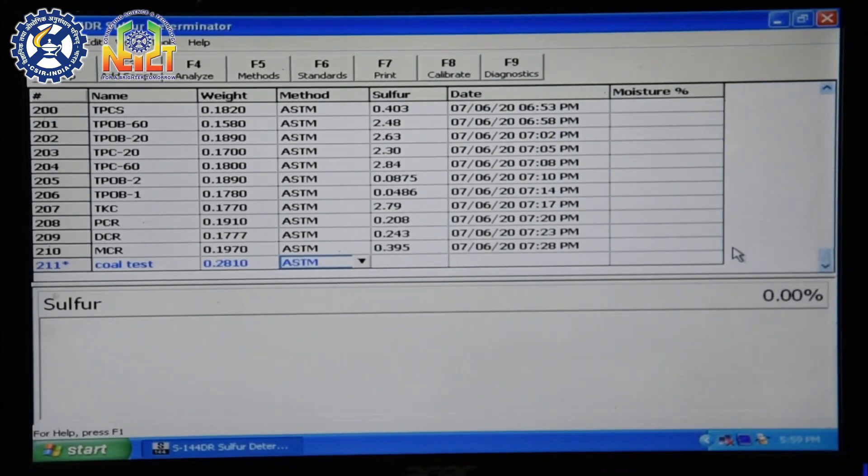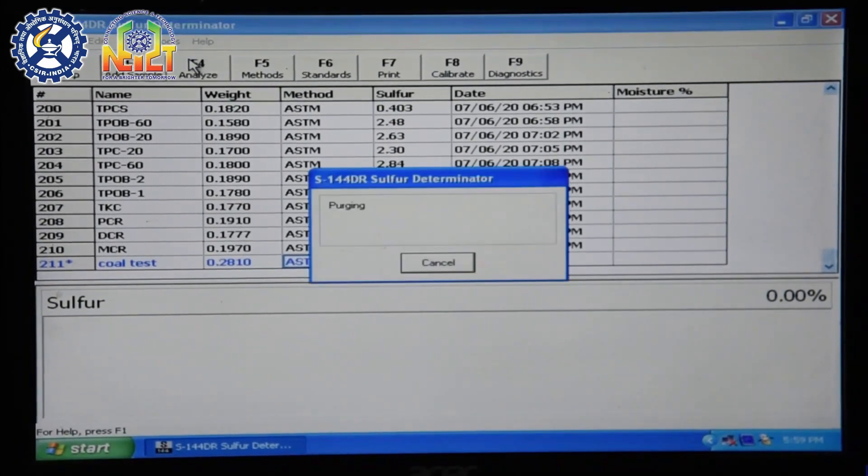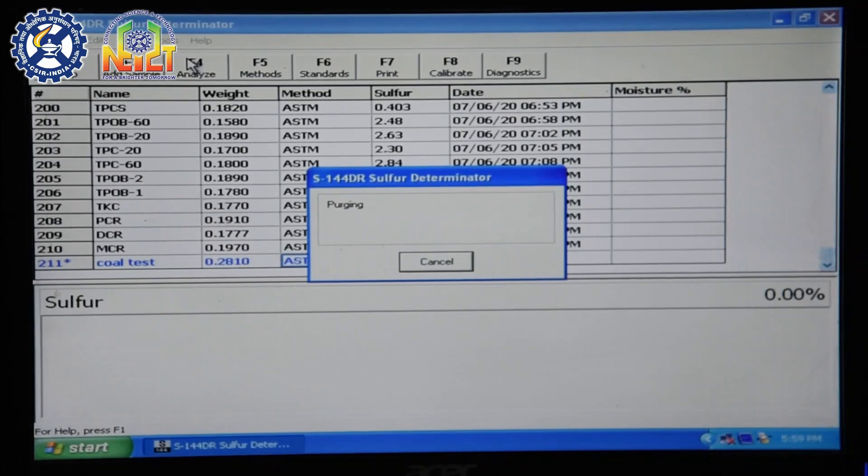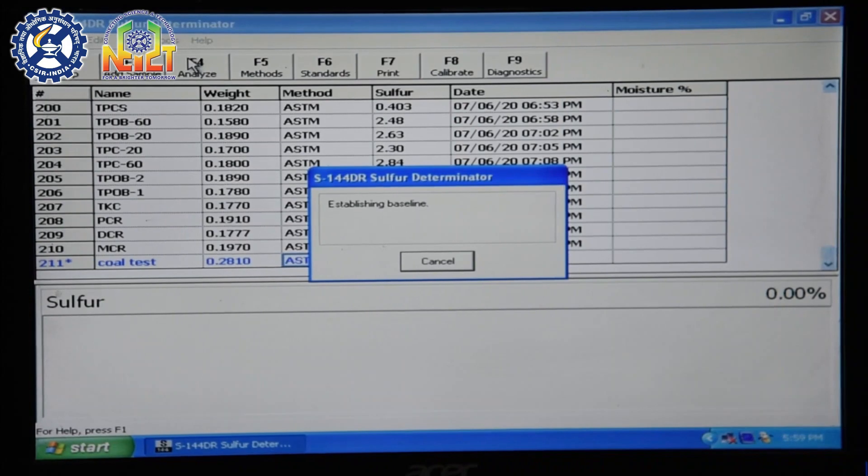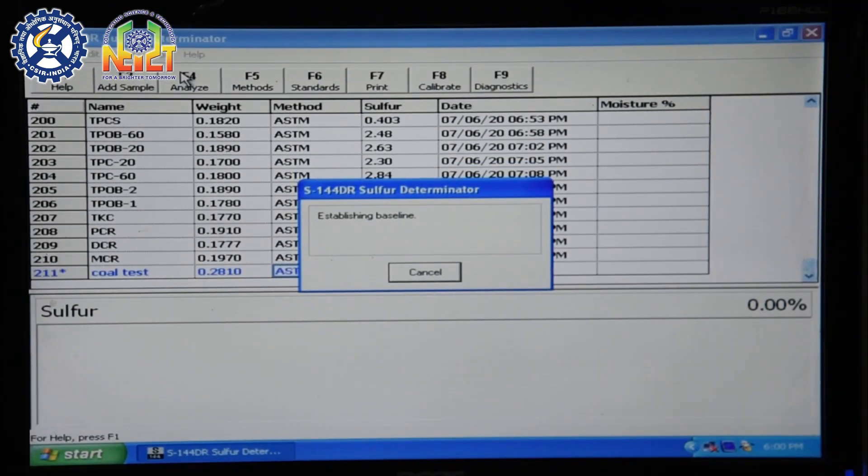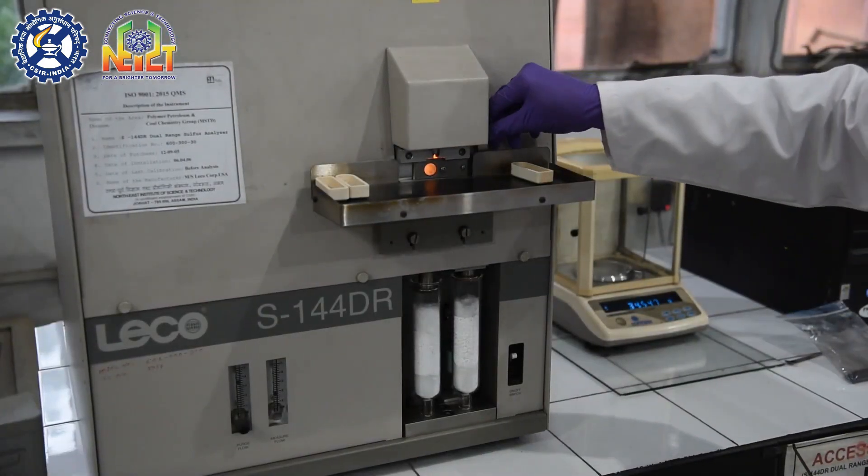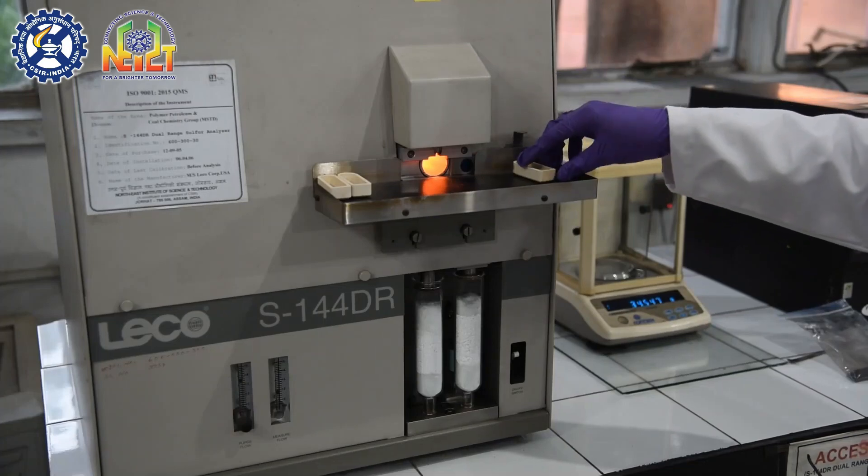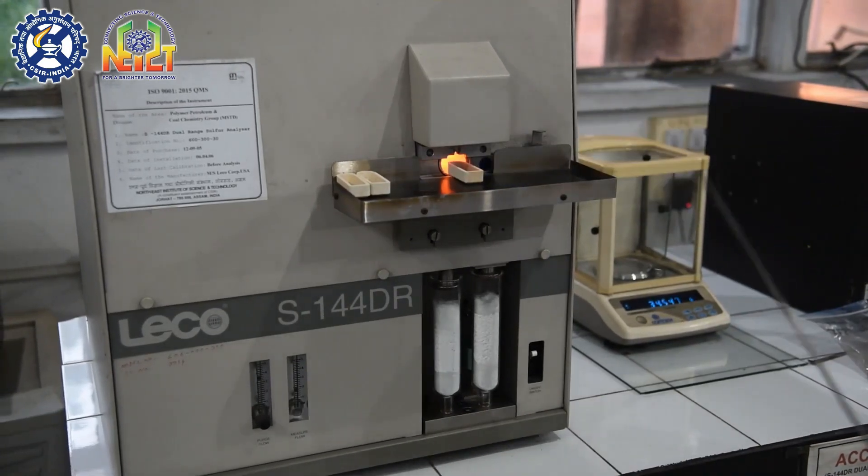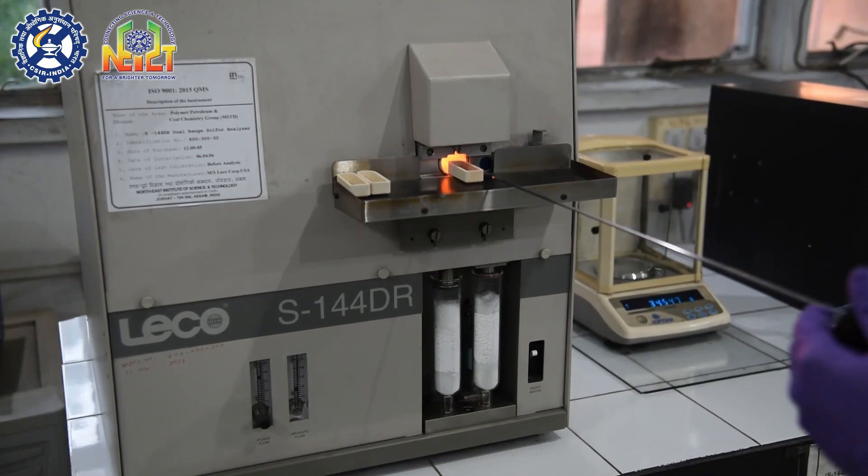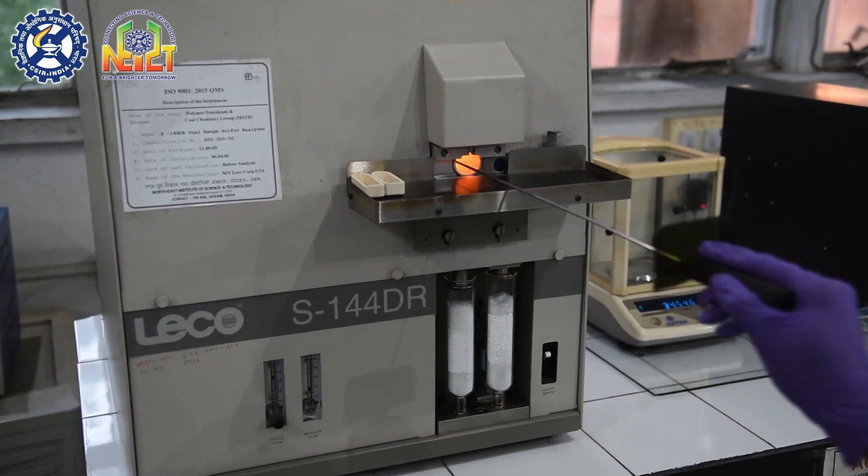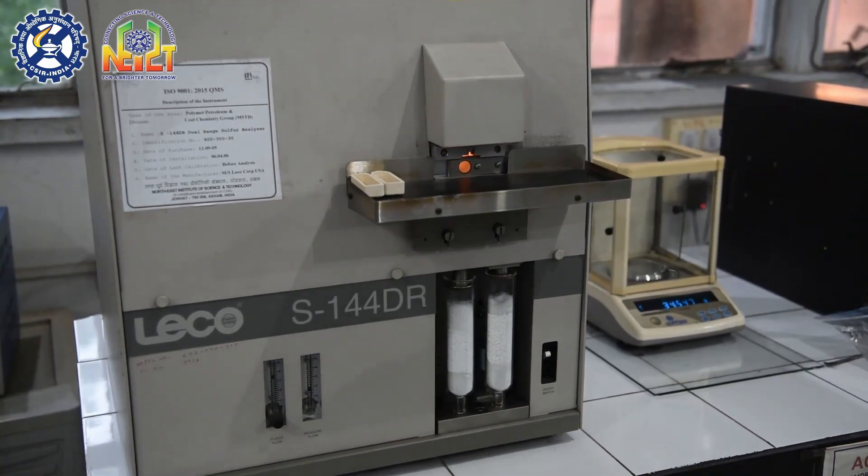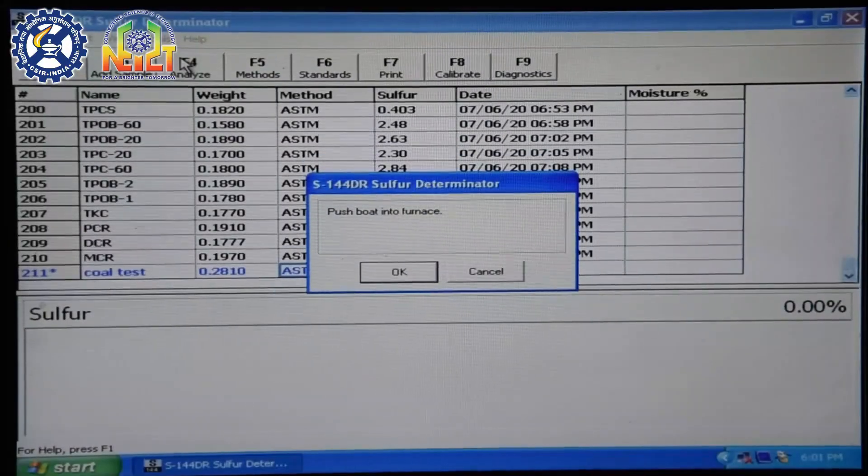A dialog box is displayed prompting to push the boat into the furnace. Open the door of the analyzer and place the boat into the furnace, inserting its rounded end first with the inserting tool. Analysis will begin automatically.